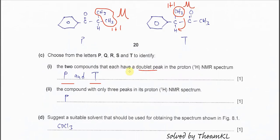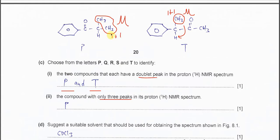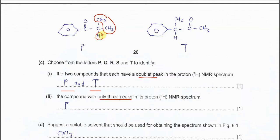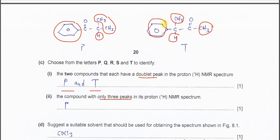Part two: the compound with only three peaks — three signals — in the proton NMR. We need to find which of P and T has three proton chemical environments. For P, there are three different proton environments, so it produces three signals. For T, there are four different proton chemical environments, giving four signals. Therefore the answer is P.